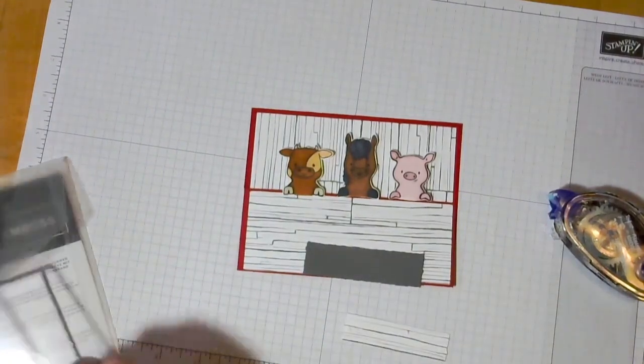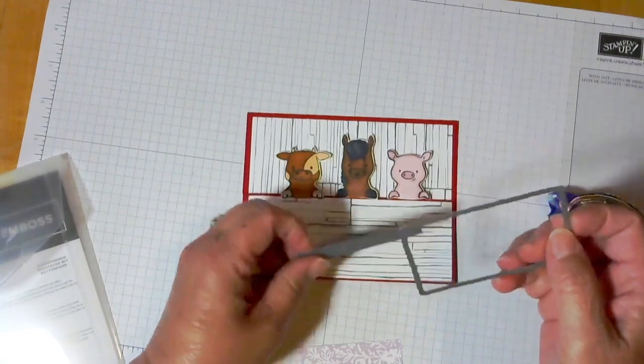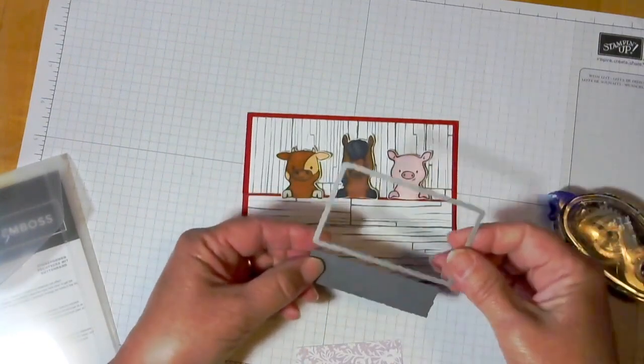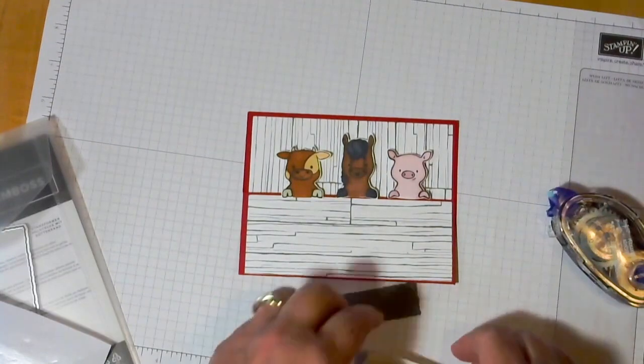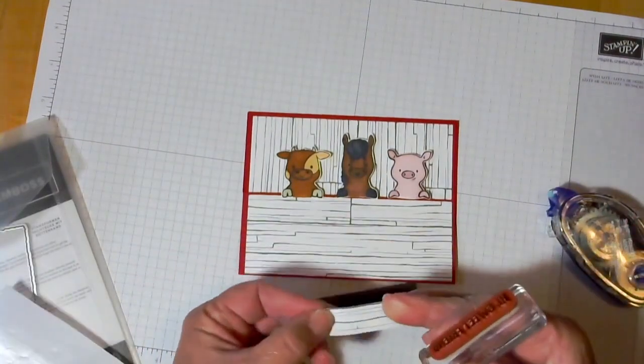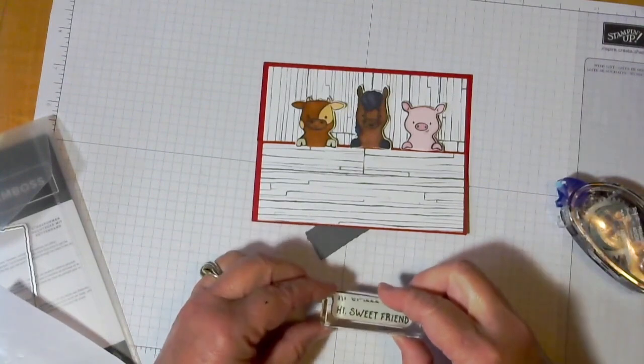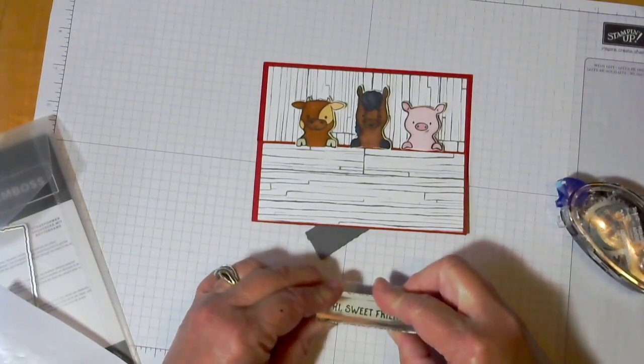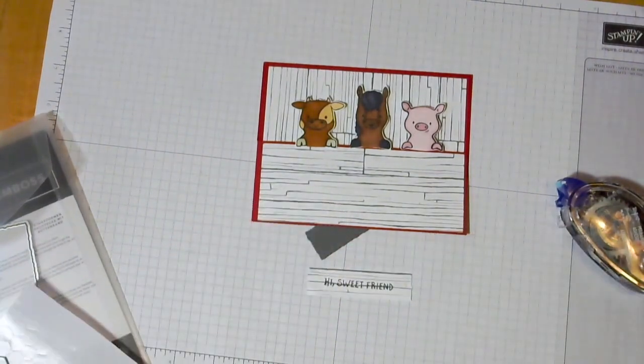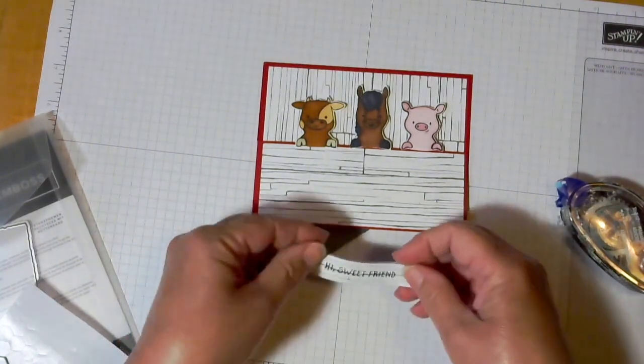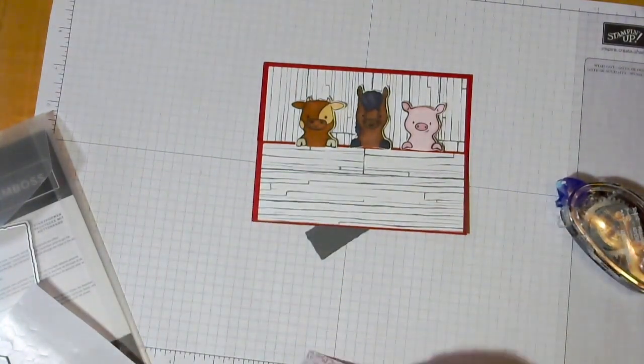So then if you have deckle scissors, you could go ahead and cut this with deckle scissors. I actually used a deckle die. And I don't have one that's the exact size that I wanted. So I literally ran it through the die cutter four times to get my deckle edge. So let's stamp our greeting. And let's see if we can figure out where it's going to show up best on this board. This one has some kind of dark lines in it. So you might want to try to find a board that doesn't have that dark line. I wasn't being quite careful enough.